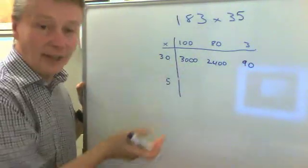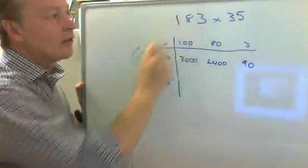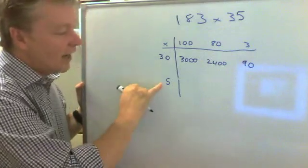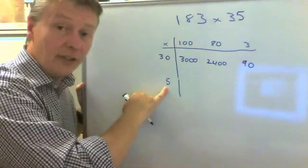And that concludes my calculations for 183 multiplied by 30. What I'm going to do now is multiply by the 5 units.